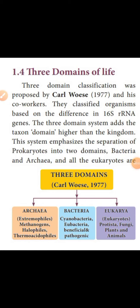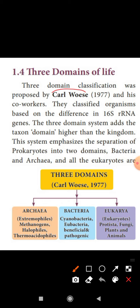Welcome to this lecture on the domains of life. The three domain system was proposed by Carl Woese and his workers. They classified life based on 16S ribosomal RNA and gene sequence work. These three domains are higher than the five kingdom classification — Monera, Protista, Fungi, Plantae, and Animalia — all of which evolved from three domains.